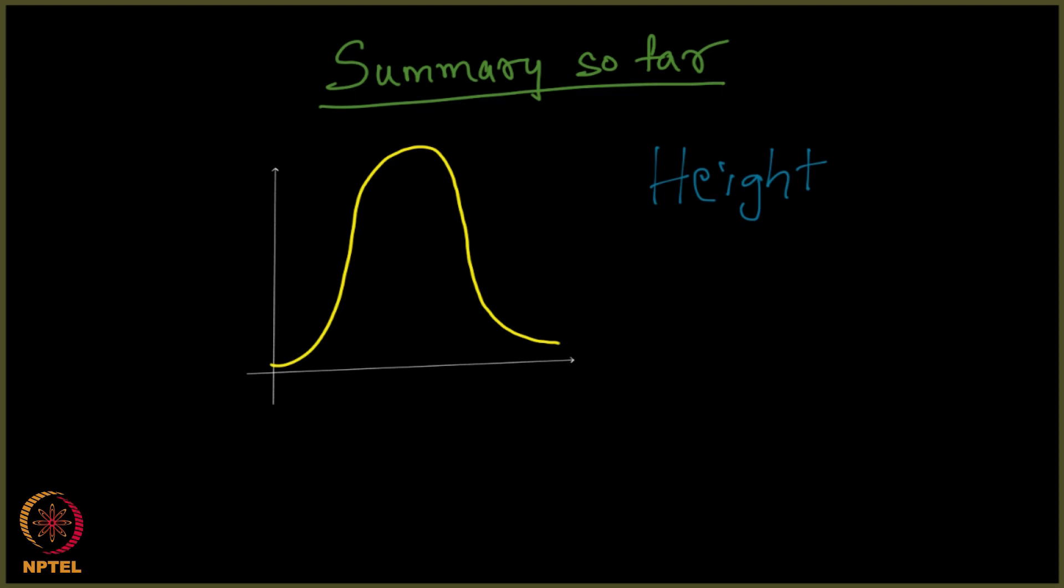But then we saw that it is not the case if you were to see what is called the web graph or the WWW graph. What do you observe? I told you that we observe a drop like this, and I told you that the drop is basically a function 1 by k square.